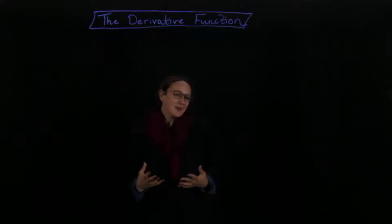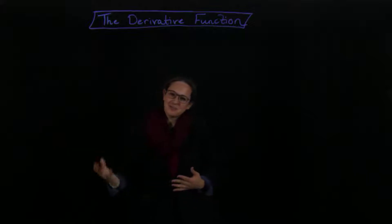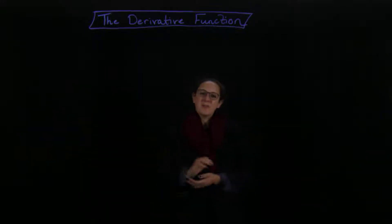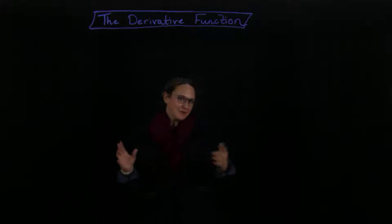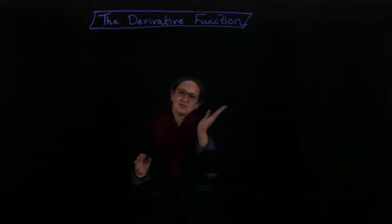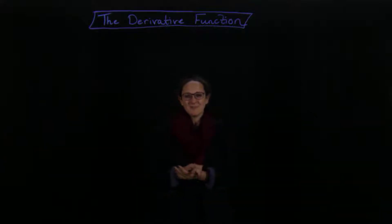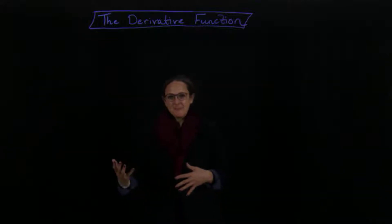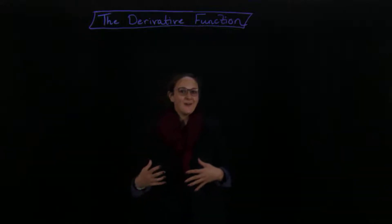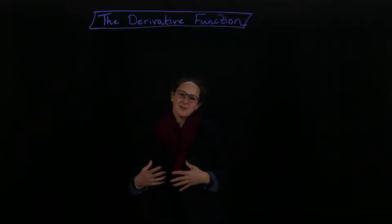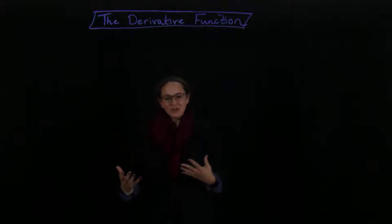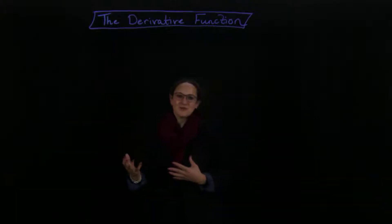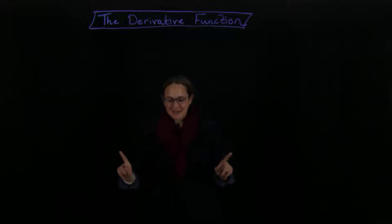Welcome. We've been talking about taking the derivative at a point, and that gives you the slope — if you graph the function, it gives you the slope at that point. We even saw how to compute it. But now we want to talk about a particular function that will encapsulate all of those slopes for all the different points at the same time.